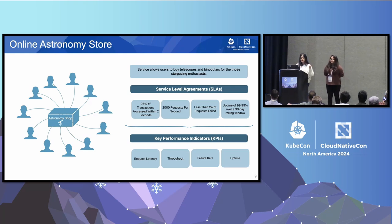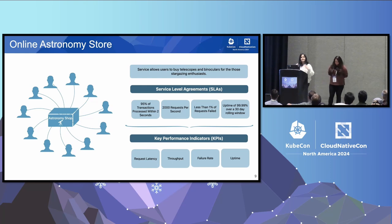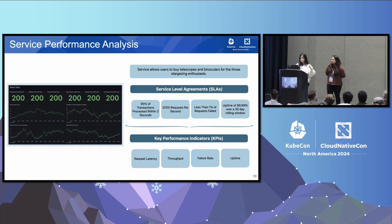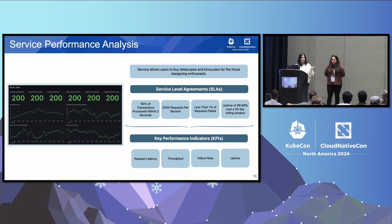You do this by setting up SLAs — service level agreements. In this case, they could be that 95% of transactions need to be processed within two seconds, at least 2,000 requests need to go through every second, or less than 1% of requests should fail. You track these SLAs by linking them to key performance indicators, which directly translate to request latency, throughput, and failure rate. You track your KPIs and SLAs to ensure there is no degradation in the service and there continues to be good user experience.